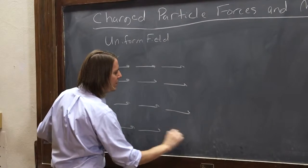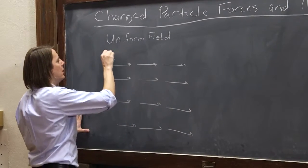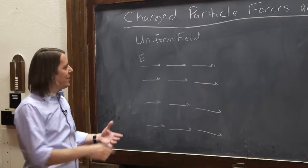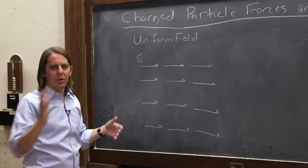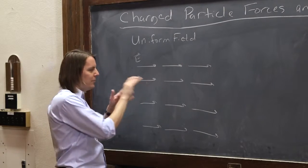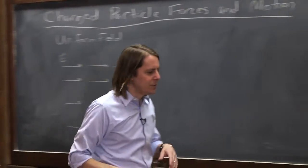So if I say I have a uniform field pointing to the right, I might draw it like that. That really means not just in the plane of the board, everywhere you go. It's just electric field vectors, they're always the same magnitude, they always point to the right. Let's look at it in the visualization lab.